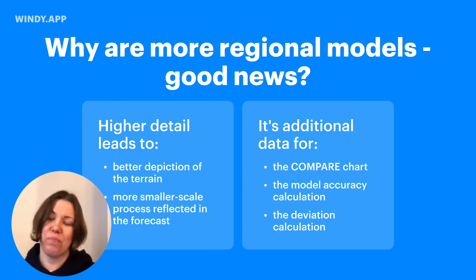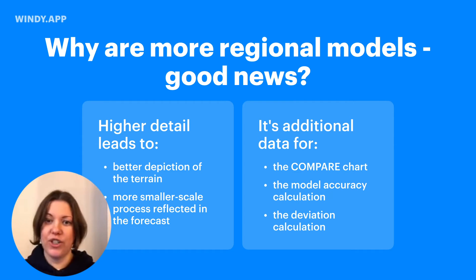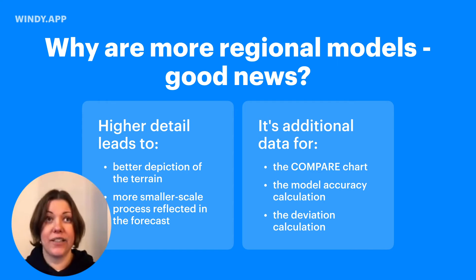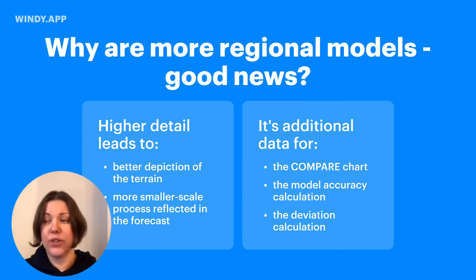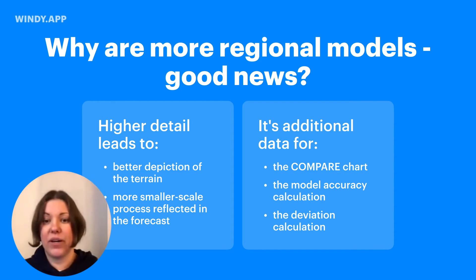Why I think it's important to speak about new weather models: the regional models we add have higher detail — two-kilometer or three-kilometer resolution. This means forecasts will better reflect the wind flow over the terrain, and not only wind flow, but also how all parameters change when it's not flat, but rather on the coastline or in the mountains. The higher the detail of the model, the better these things are forecasted.